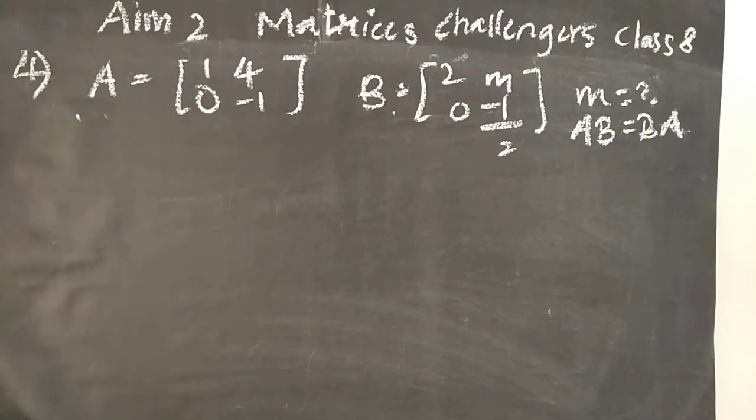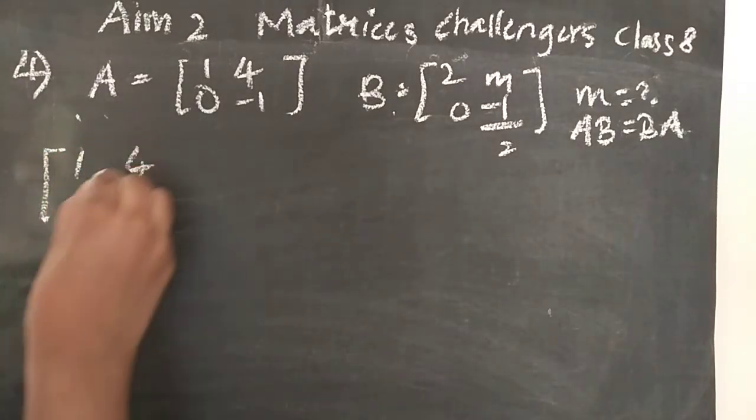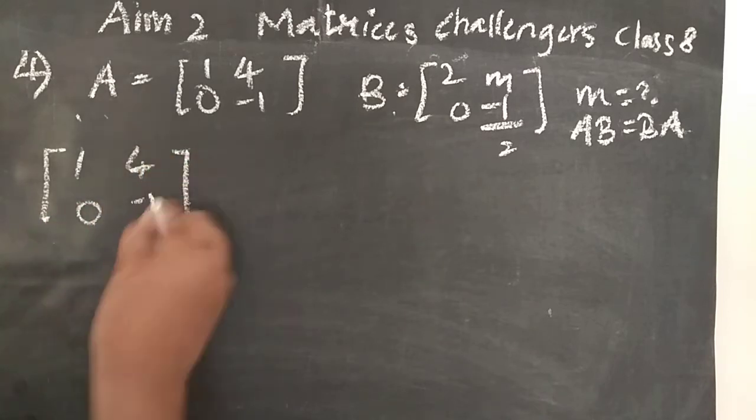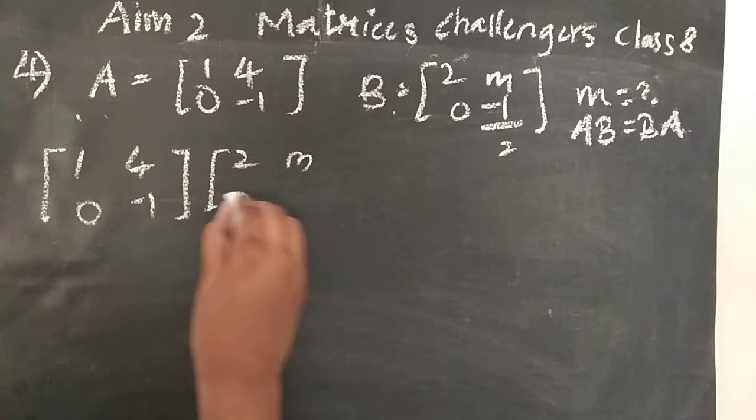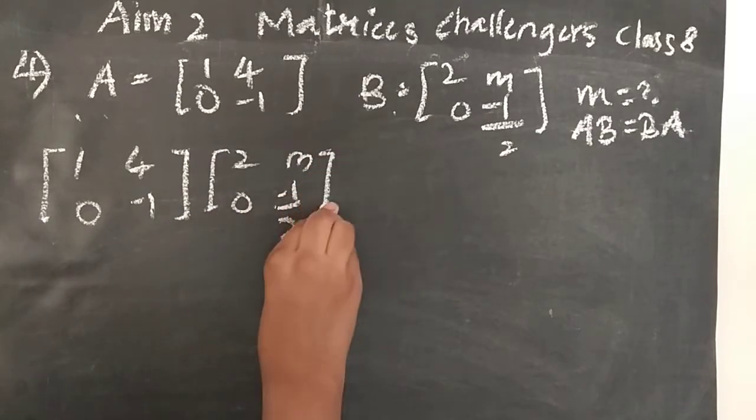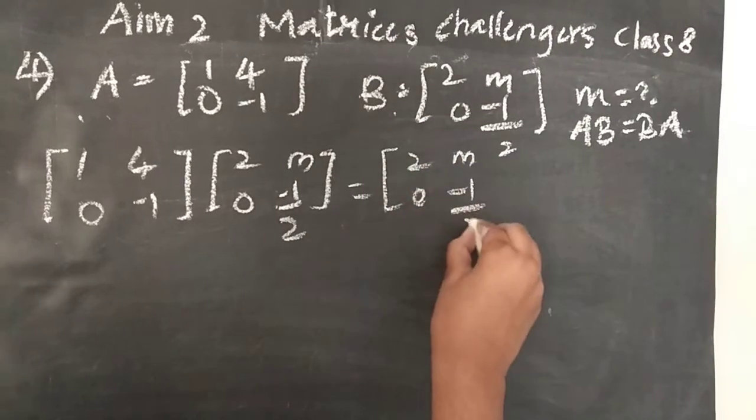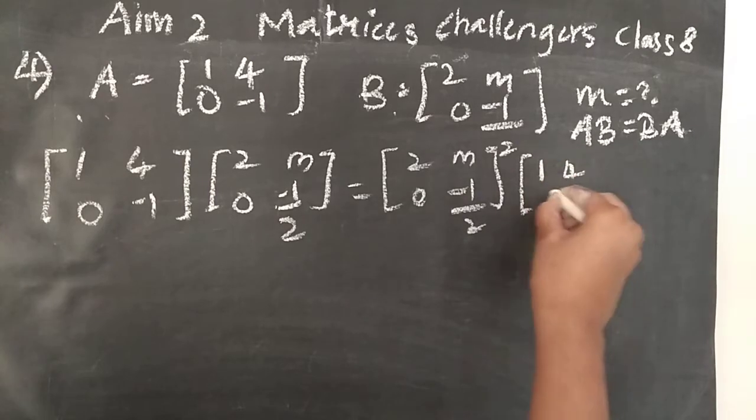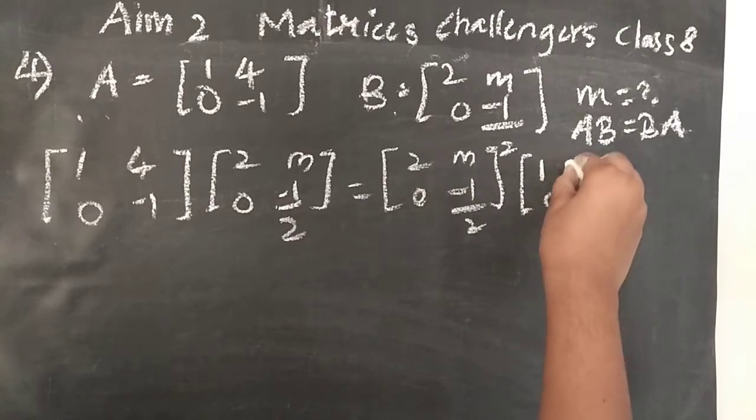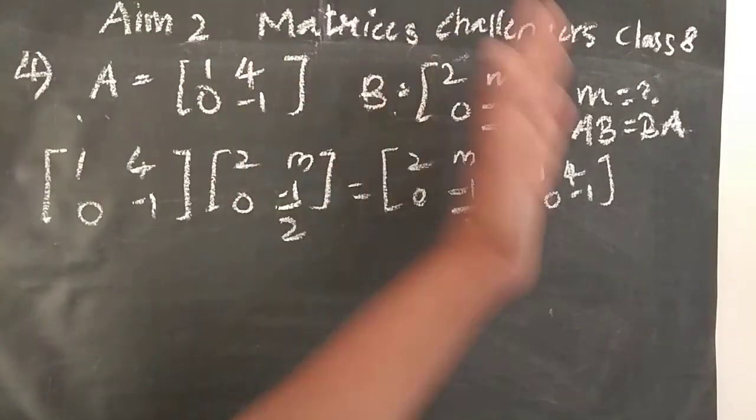So when you multiply AB, it's BA also. It is a criterion given to us. Let's start solving now. So AB, keep AB on one side: 1, 4, 0, minus 1, into 2M, 0, minus half, equal to BA. Now 2M, 0, minus half into 1, 4, 0, minus 1. So AB equal to BA, that's it, simple.